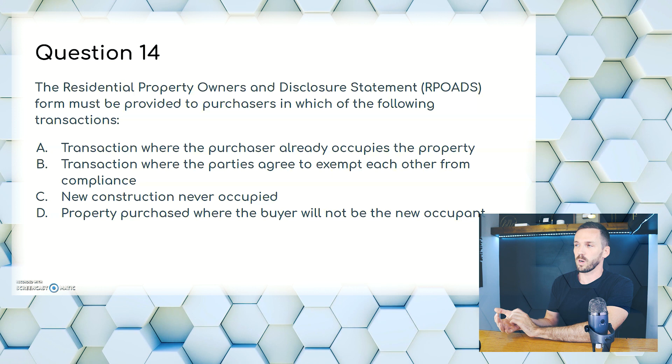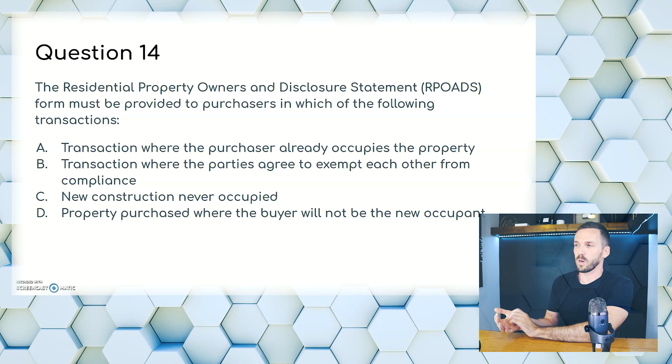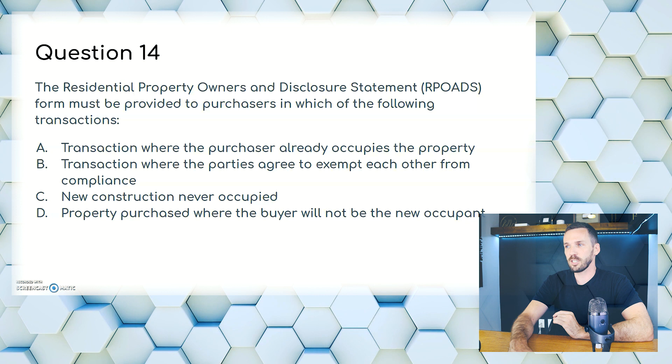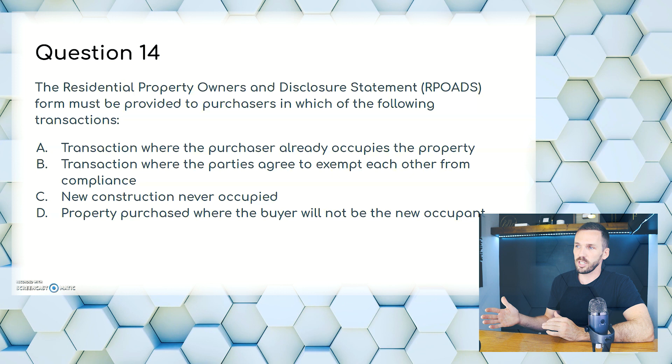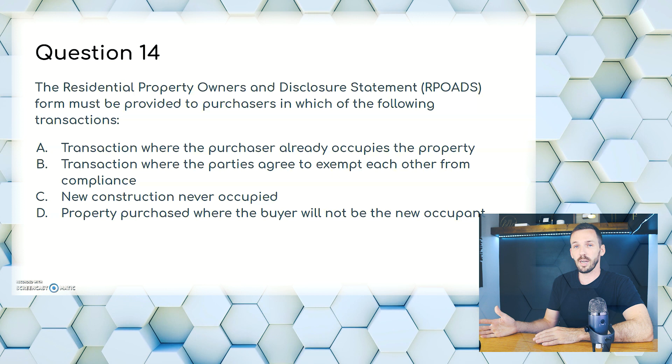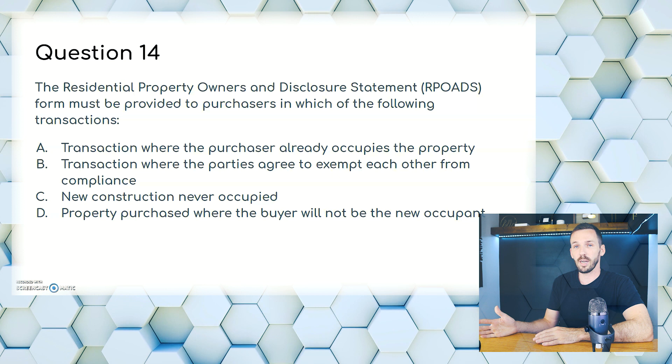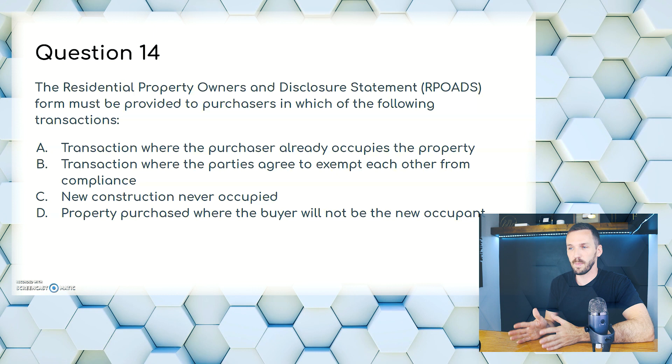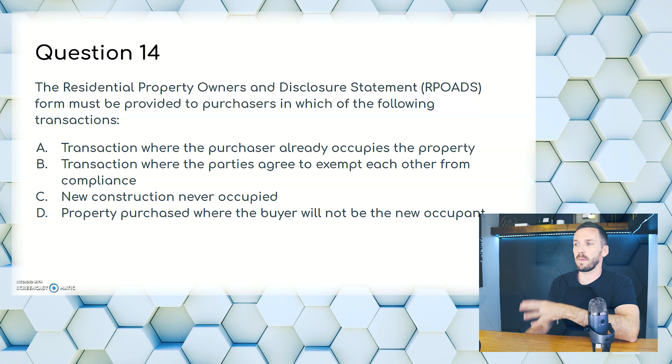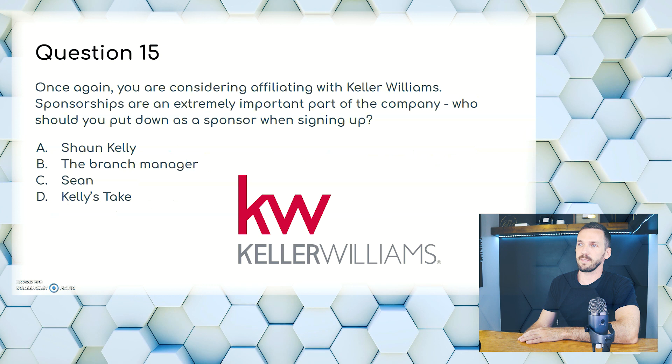Question 14. The RPOD form must be provided to purchasers in which of the following transactions? A, where the purchaser already occupies the property; B, where the parties agree to exempt each other from compliance; C, new construction never occupied; or D, property purchased where the buyer will not be the new occupant. You're never exempt from compliance, and new construction has no previous owner to disclose problems. The answer is D.